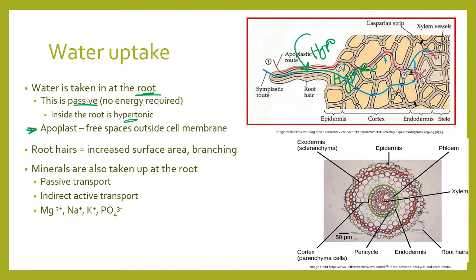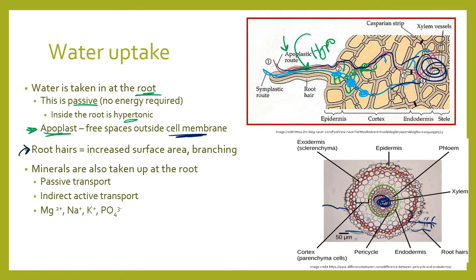There are two different paths that water can take: the apoplastic route and the symplastic route. In the symplastic route, water goes into a cell and then moves into the next cell and the next. Water can also move through the apoplast — the apoplastic route — moving between cell walls; that space between the cells outside the cell membranes is the apoplast. Both ways eventually get the water into the xylem vessels at the very center of the root. Roots also have little hairs called root hairs that increase surface area to allow for more water absorption.